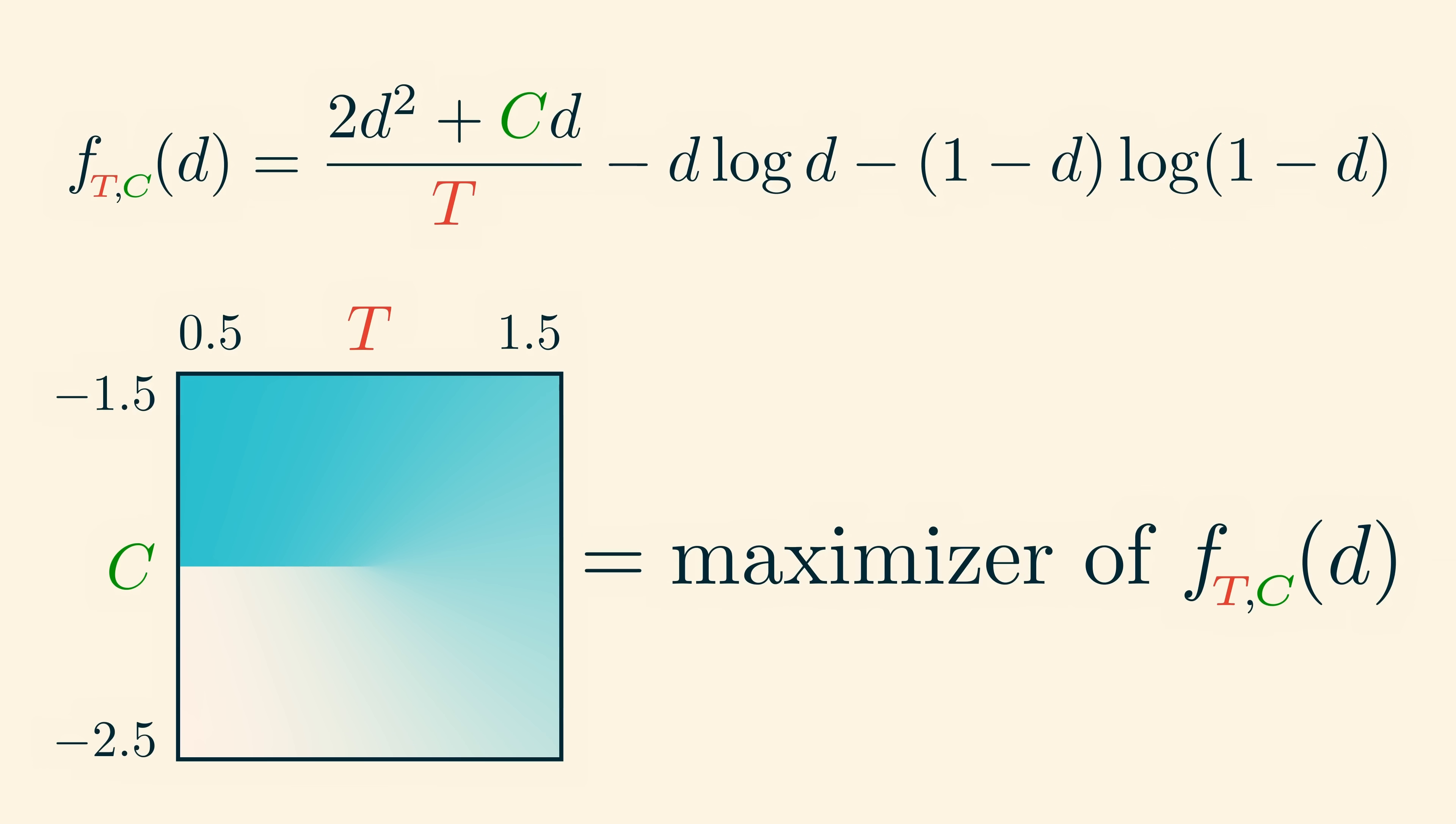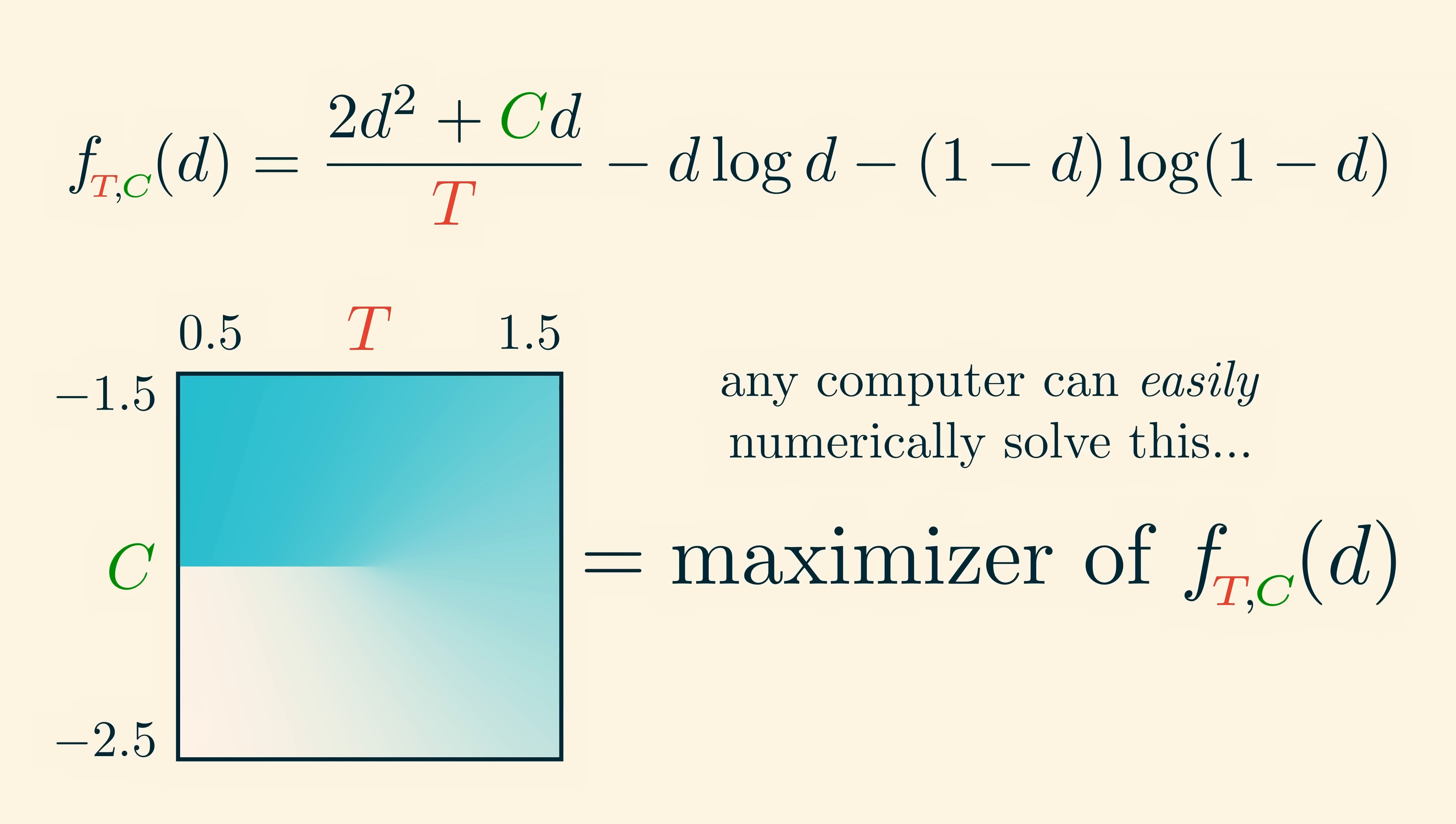Unfortunately, because of these logarithms, there actually isn't a simple exact formula for the maximizing density d as a function of t and c. But any computer can easily numerically solve this optimization problem and get an extremely accurate answer in a matter of milliseconds. This is much faster than running our Markov chain Monte Carlo simulation to try and approximate the phase diagram. So for all intents and purposes, we can say that we've solved the phase diagram problem.